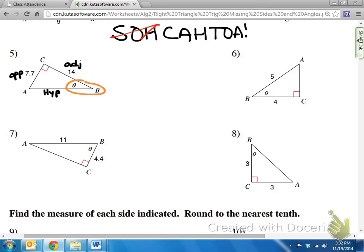So I can't use sine, because it has the hypotenuse, I can't use cosine, because it needs the hypotenuse. All I can use is tangent, or TOA, to find what my missing angle is.